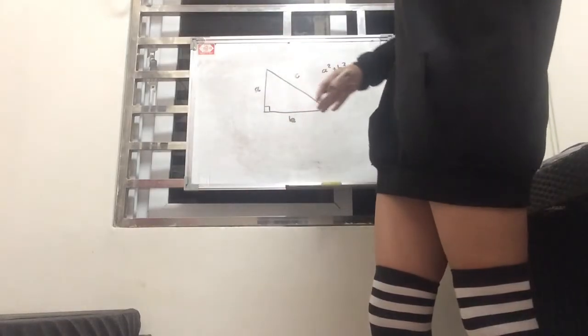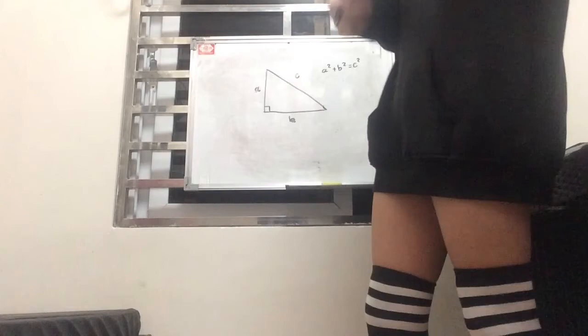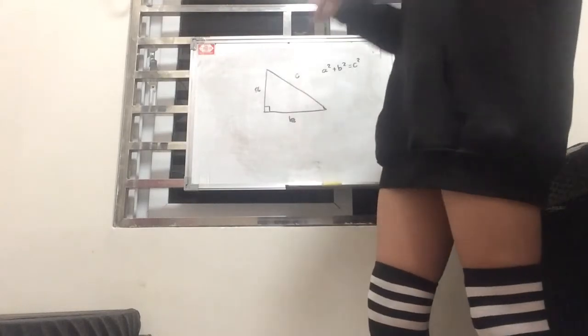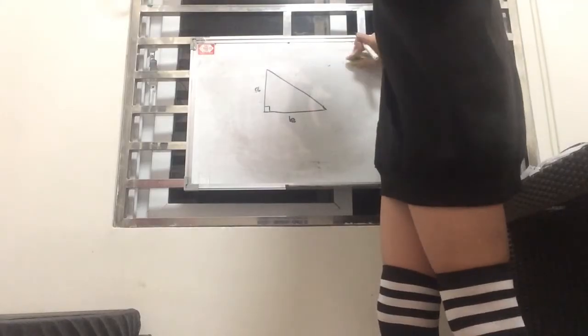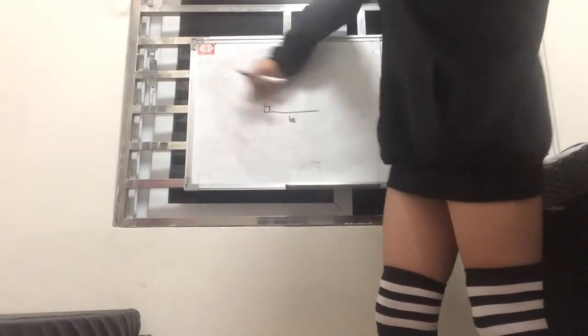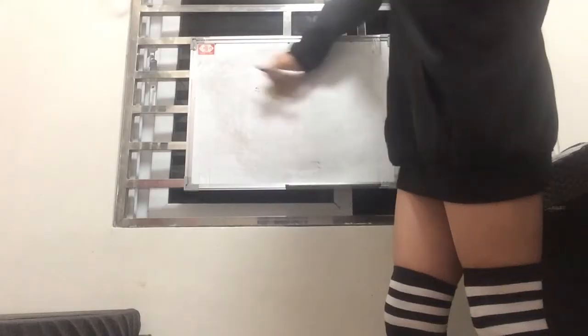So how do we find out c or a or b given the other two sides? Basically we just do some basic algebra. I'm going to erase this and move it to a different part of the board so we have more space to calculate.